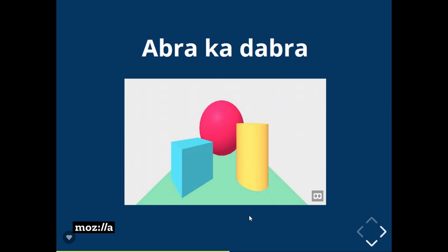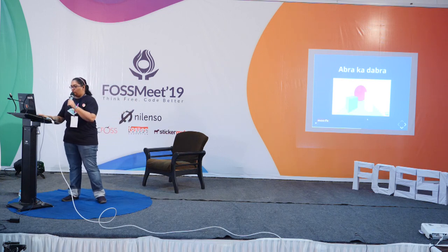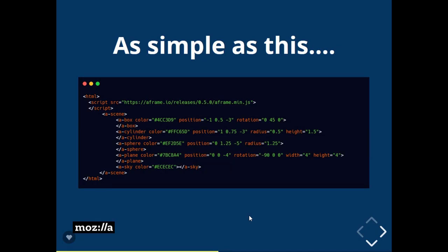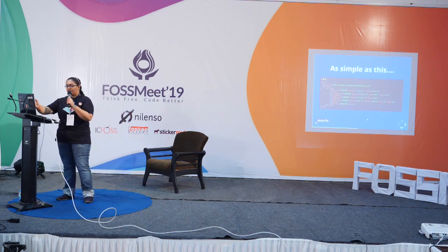This is the hello world program in A-Frame. It contains four components and has been wrapped into an environment called sky. The sky is a wrapping layer which gives a 360-degree feel — just like how the real-world sky surrounds you, it does the same in VR. The components are very explicit: A-Box gives you a cube, Cylinder gives you a 3D model. It's very explicit and easy to use.